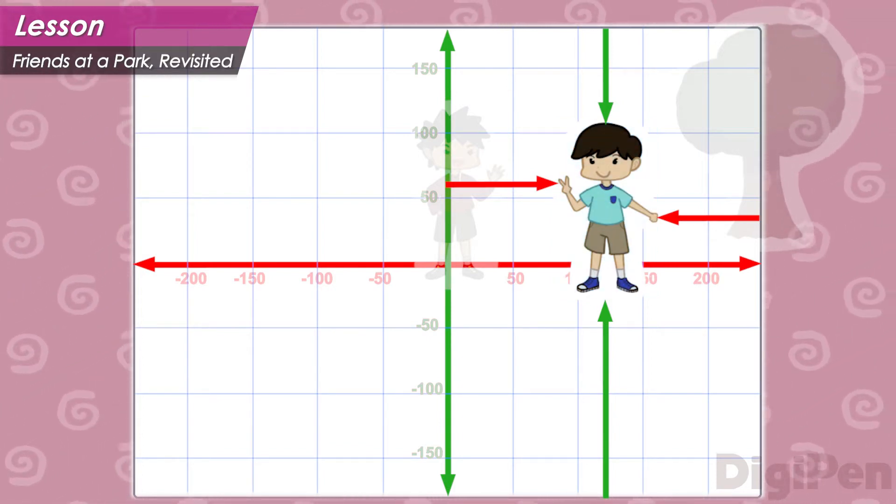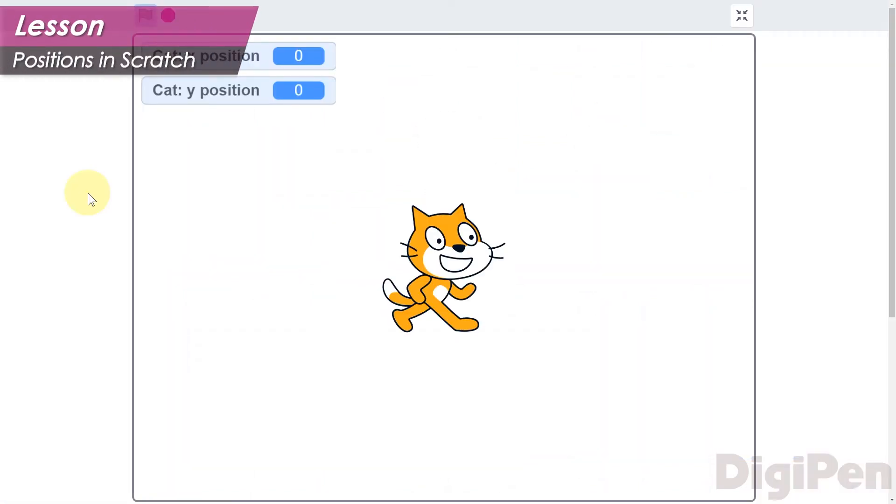Instead, most games would choose a single point, usually within the area of your friend, and say that that is the position of your friend. This is exactly what Scratch does as well.